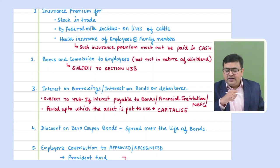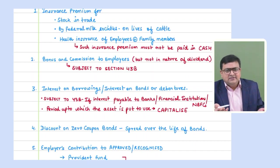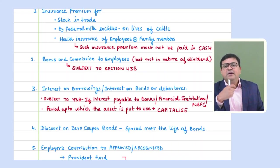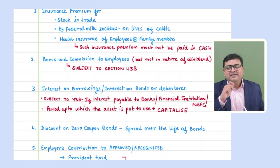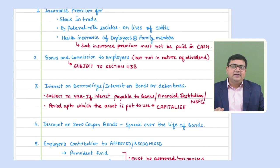Second point: if you pay bonus or commission to your employees, it is a business expense and is allowed under Section 36. However, it is subject to Section 43B — a very important section of PGBP which we will also discuss later.